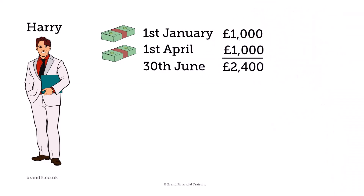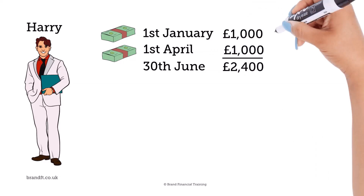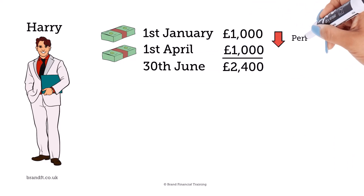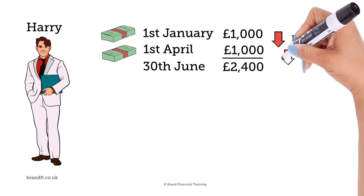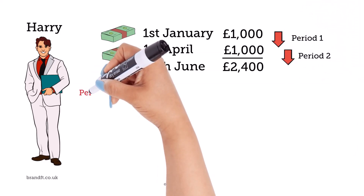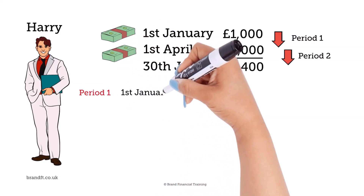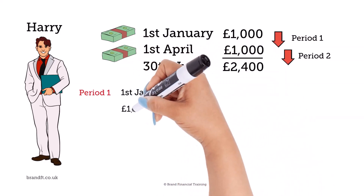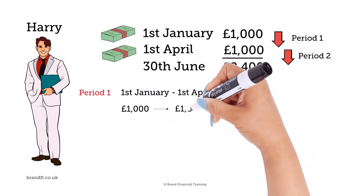To work out the TWR, we need to establish the return between January and April. We'll call this period 1, and then between April and June, period 2. Period 1, then, is the first three months when the fund grew from a starting point of £1,000 to £1,200.